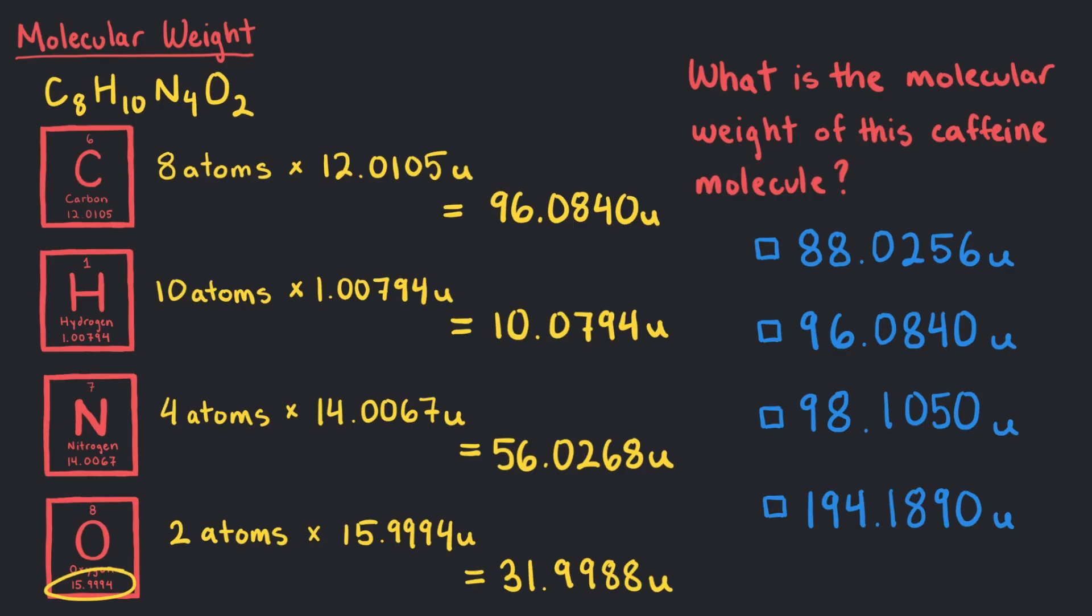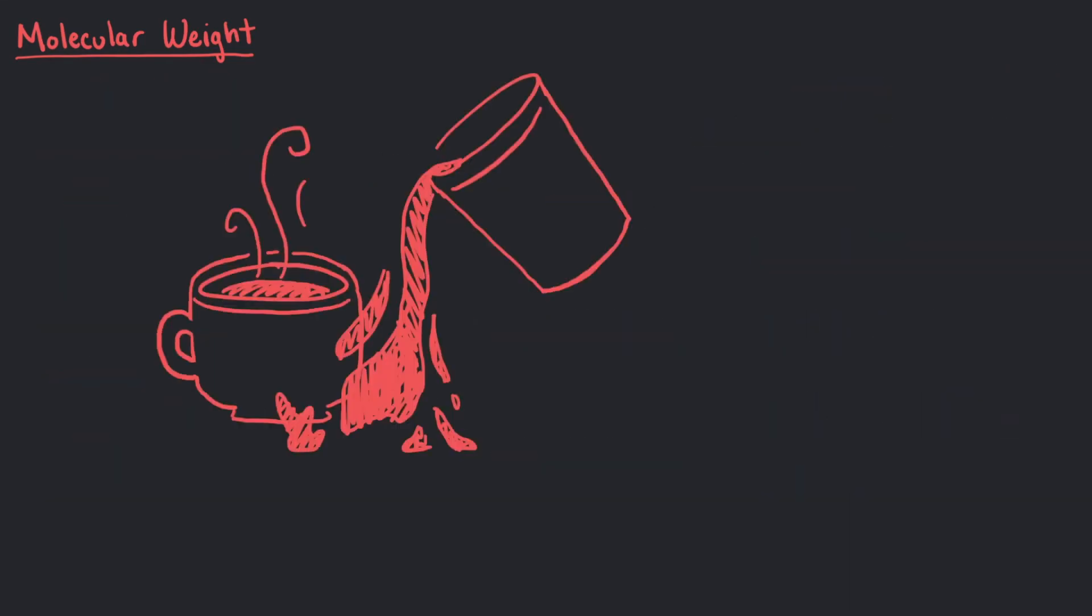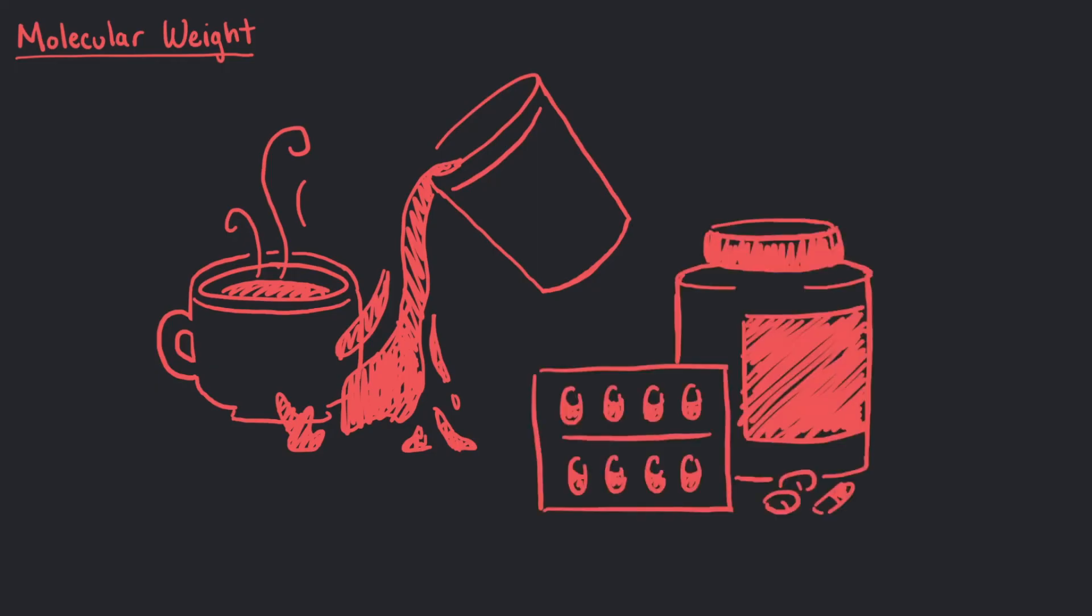Finally, we add them all together to equal 194.1890U. Caffeine is not only prominent in tea and coffee, but it is very common to find it in many prescriptions and over-the-counter medications such as pain relief remedies. Check the ingredients in any of yours.